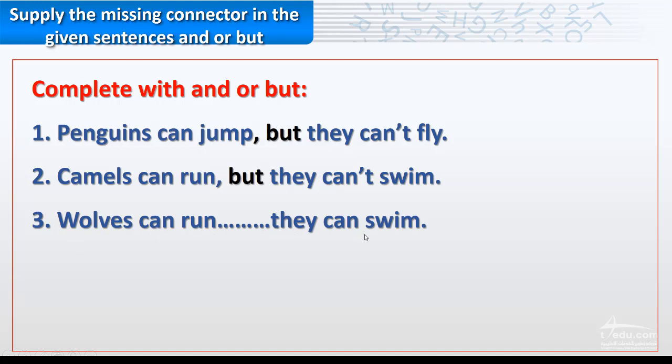Number three: Wolves can run, they can swim. Wolves can run, space, they can't swim. Wolves can run and they can't swim, or wolves can run but they can't swim. The correct answer is and. Wolves can run and, also means also, they can swim also.